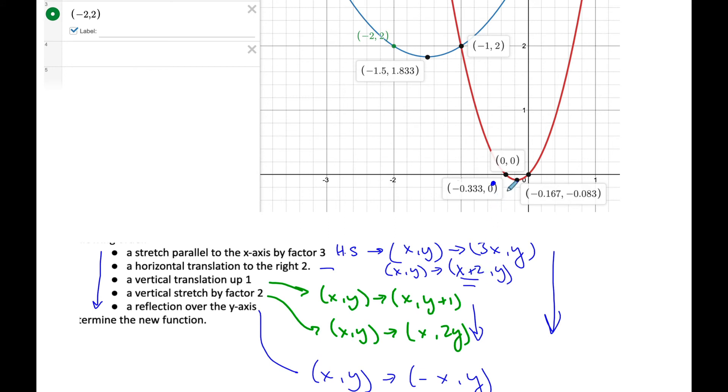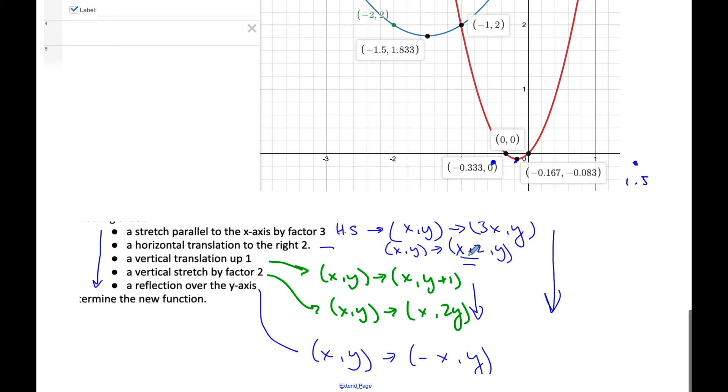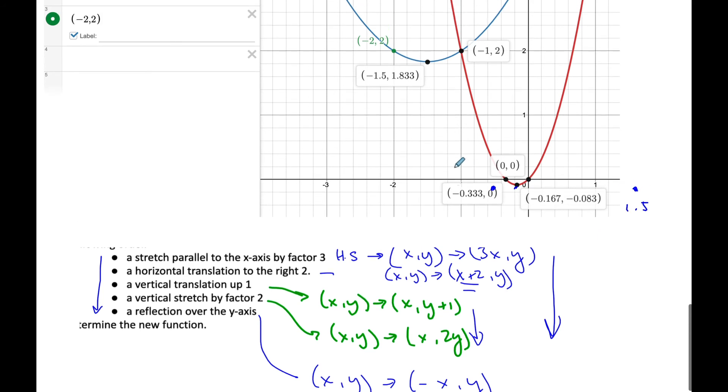Then I'm going to add 2 to it. So it means I'm going to go 1, 2. So now I'm over at positive 1.5. And then I reflect it over here to negative 1.5, which you can see the x value of my vertex is negative 1.5.